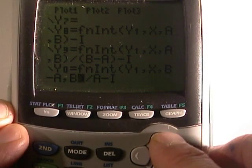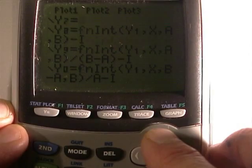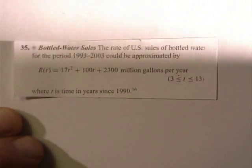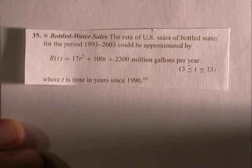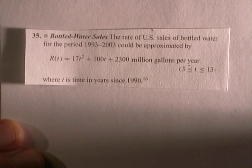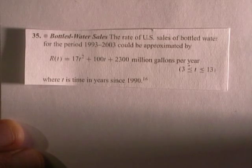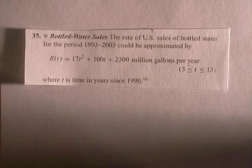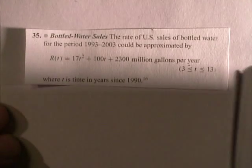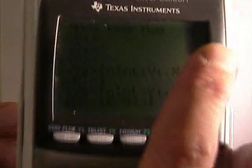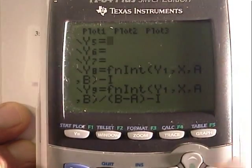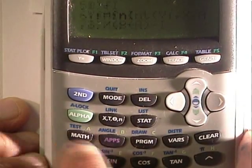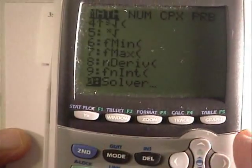Alright. Now we're going to move on and we're going to answer the first question. What is the total sales of bottled water from 1993 to the year 2003? Well, 1990 is zero. So, how do we get started in this process? We hit the math key. We go down to solver. We load up solver.